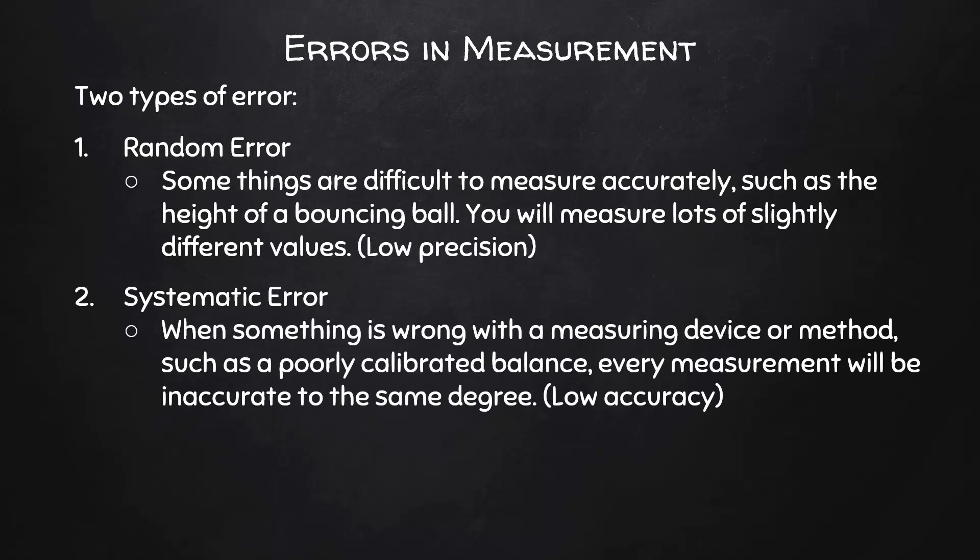When something is wrong with a measuring device or method, such as a poorly calibrated balance, every measurement will be inaccurate to the same degree. This measurement would have low accuracy. And of course, both types of error can be present in the same measurement, for instance, if you tried to measure the height of a bouncing ball with a broken ruler.